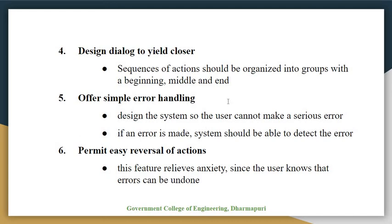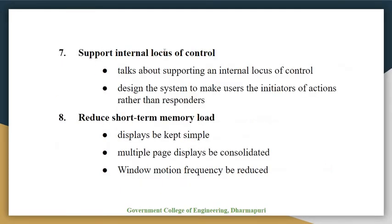The seventh golden rule is to support internal locus of control. Experienced operators strongly desire the sense that they are in charge of the system and that the system responds to their actions. Design the system to make users the initiators of actions rather than the responders.